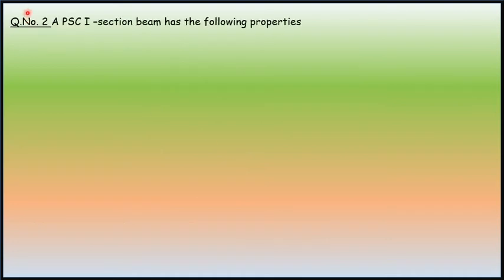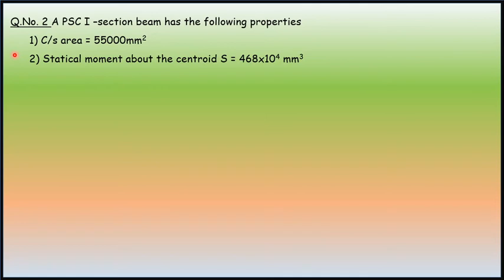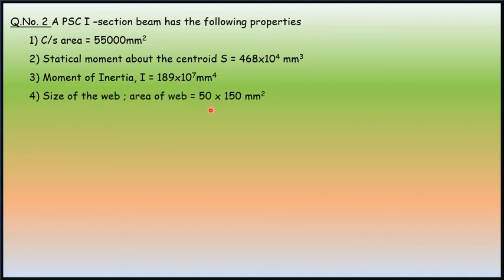Second one. A PSC I-section beam has the following properties: Cross-sectional area 55,000 mm square, statical moment 468 into 10 raised to 4, moment of inertia 189 into 10 raised to 7, size of the web, area of the web.